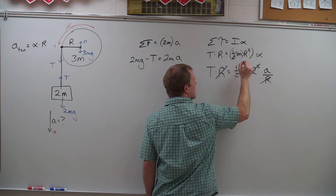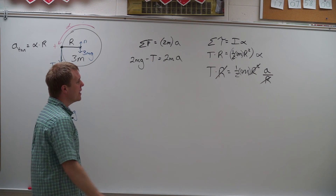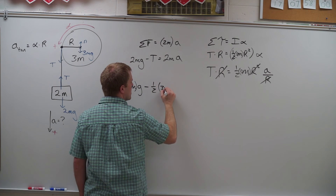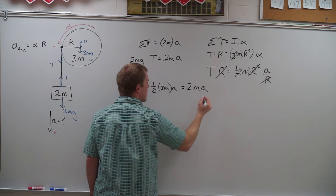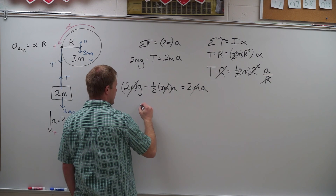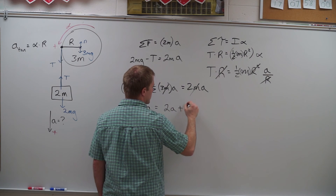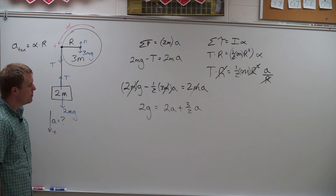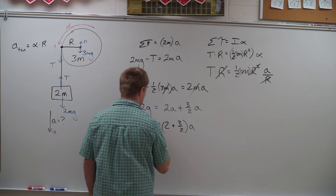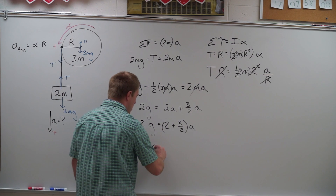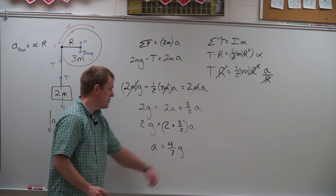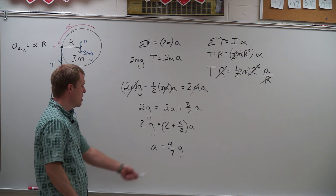The disc mass is 3m. So making my substitution for tension, I have 2mg minus one-half times 3ma equals 2ma. All of my m's cancel and I can solve for a. Getting my a's on the same side: 2g equals 2a plus three-halves a. Combining: 2g equals (2 plus three-halves) times a. Solving for a, we end up with four-sevenths g — a fraction of the acceleration of gravity. If you want to plug that into 9.8 you're welcome to; I'll leave it as this.